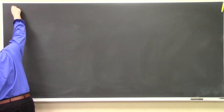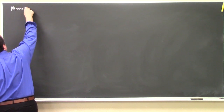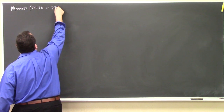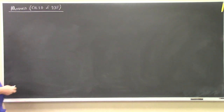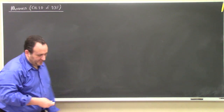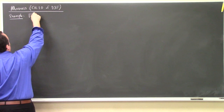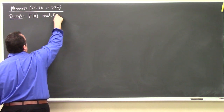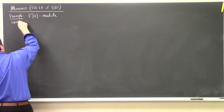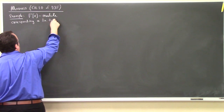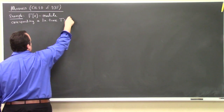Back to the story of modules again. We're in chapter 10 of Dummit and Foote, third edition. Last time we basically gave the definition of an R-module and looked at examples. The last example was the F[x]-module corresponding to a linear transformation T mapping from a vector space to a vector space.